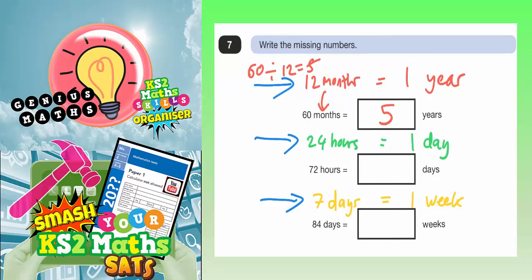Moving on to the second one. Every one day is worth 24 hours. So we need to see how many lots of 24 go into 72. So it's 72 divided by 24. Okay, easiest thing to do there is just to count up in 24s.